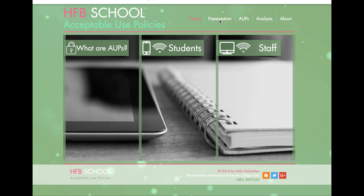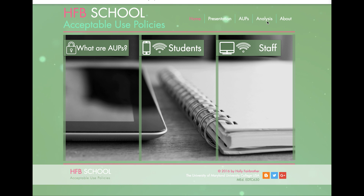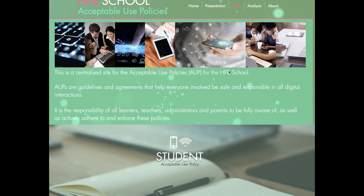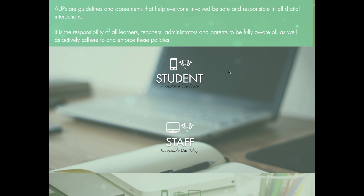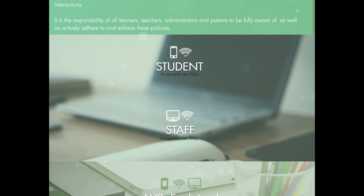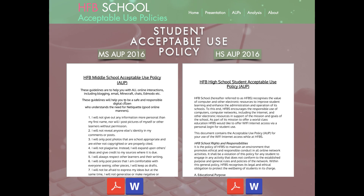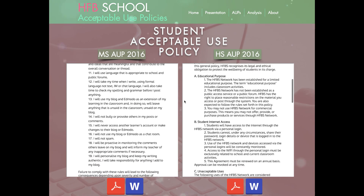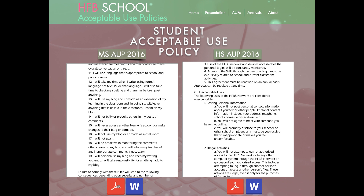We use this for training on an annual basis. There's also an analysis on here of what we need to do as a school to ensure that we stay current and up to date with our acceptable use policies and ensure that they are relevant for our particular school. Access to the AUPs is via the home page or the horizontal menu bar. On the page for students, both the middle and high school AUPs can be accessed either by reading them online in the embedded document or to print in hardcopy via download of either a PDF or a Word document.